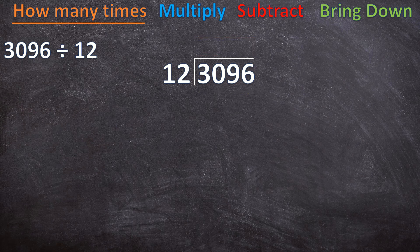So the first thing you ask yourself is: how many times can 12 go into 3? 12 cannot go into 3, so I put a little dot above the 3 to leave that space open. Now I move on to the next digit — I include the 0. So now I ask myself: how many times can 12 go into 30? 12 can go into 30 two times.